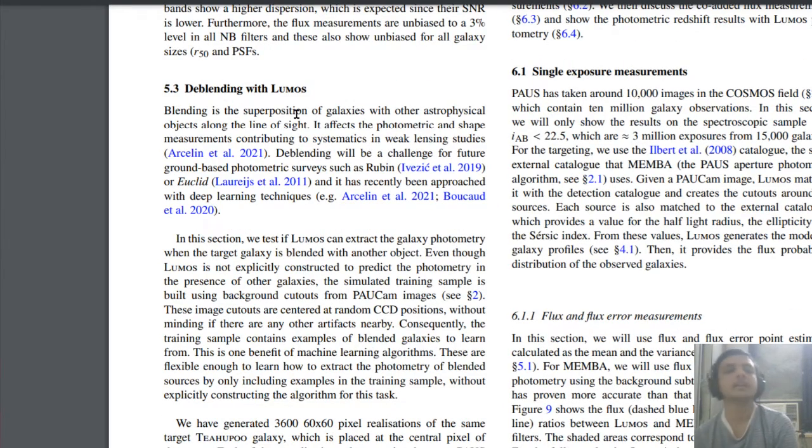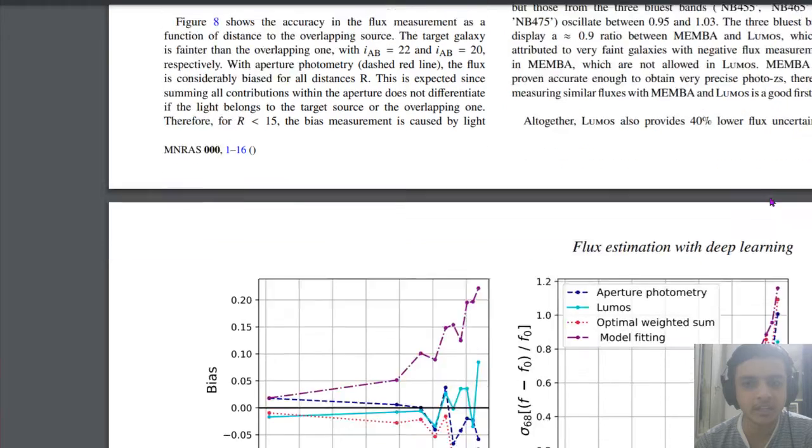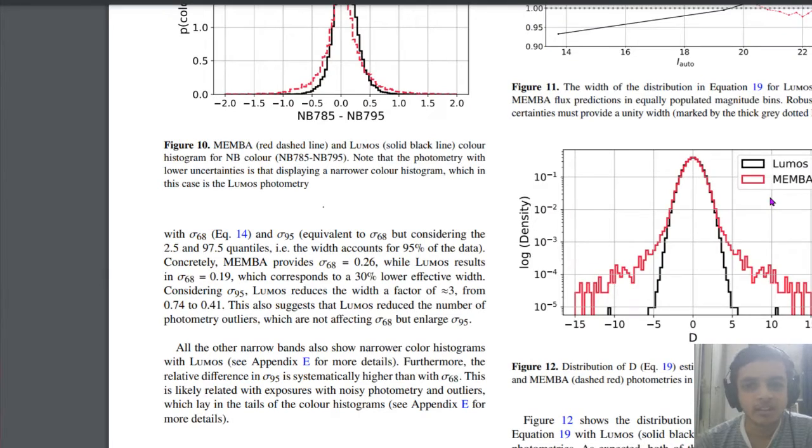Now they are talking about de-blending. In galaxy photometry, de-blending is a very important aspect to do as a pre-processing. De-blending basically means that it's a superposition of galaxy with other objects from our line of sight and it kind of affects the measurements. We are not able to detect the exact luminosity or exact properties of the galaxy that we want to know. That's why it's very important that we have good de-blending techniques.